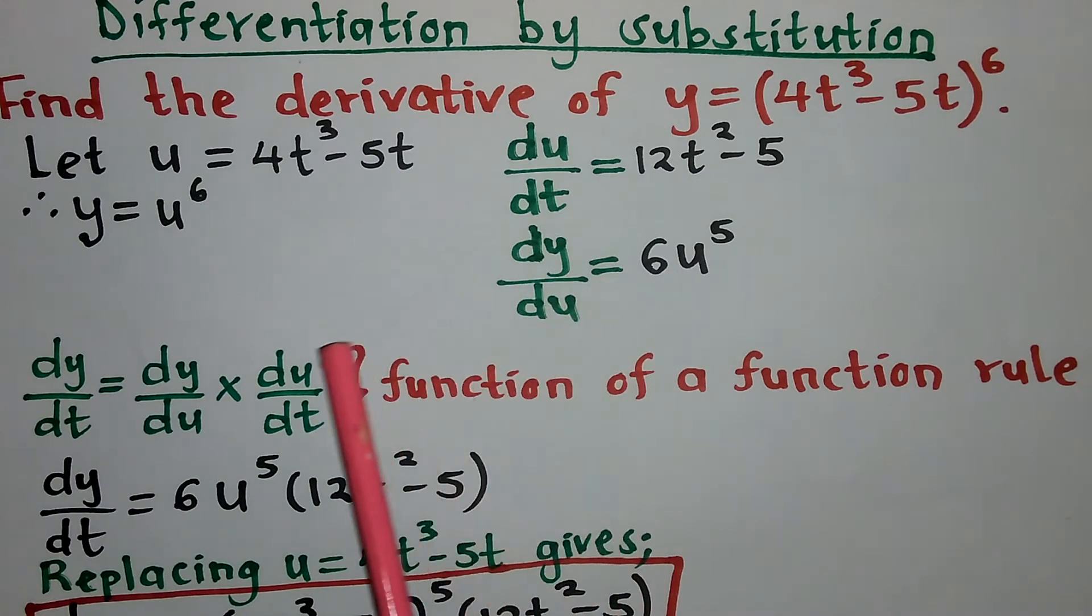After that we use the function of a function rule. We then replace our values in the function of a function rule. My dy/dt will be 6u⁵, and du/dt will be 12t² - 5.